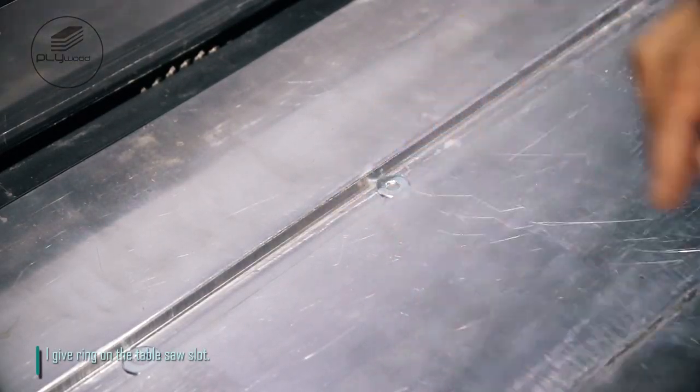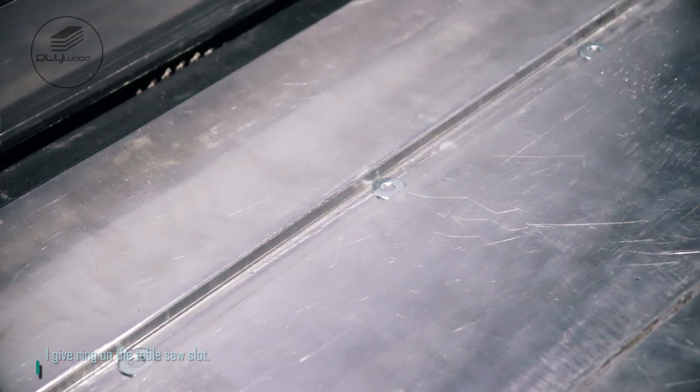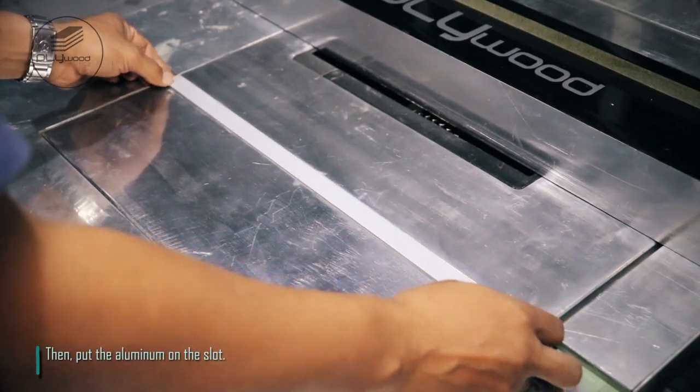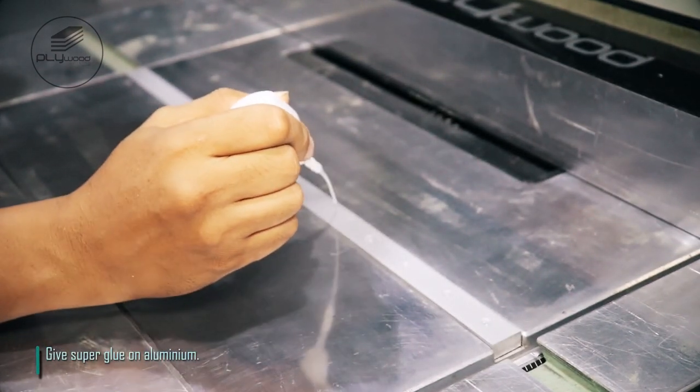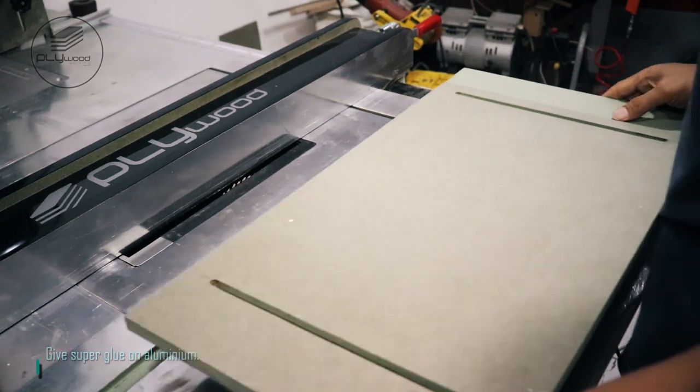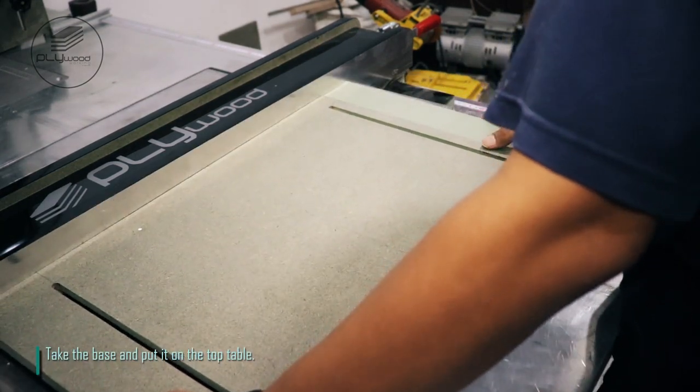I give ring on the table saw slot. Then, put the aluminum on the slot. Give super glue on aluminum. Take the base and put it on the top table.